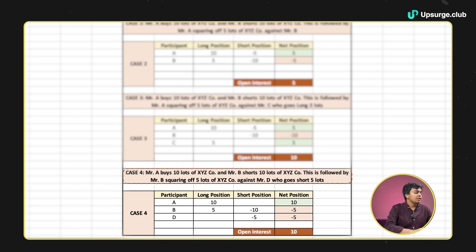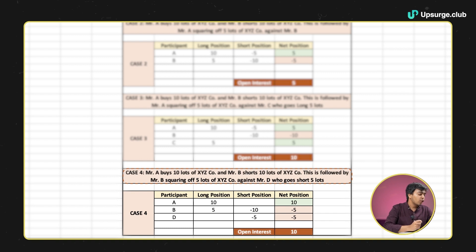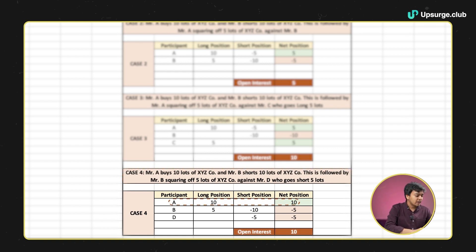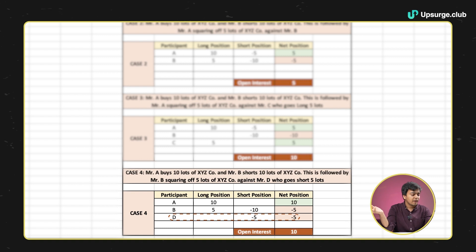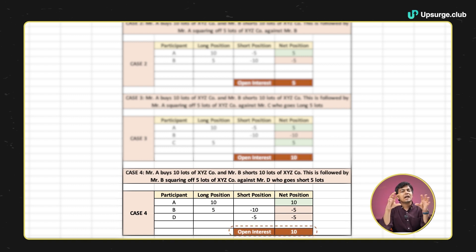In case 4, similarly, Mr. A buys 10 lots of XYZ and Mr. B shorts 10 lots — open interest is 10. This is followed up by Mr. B squaring off 5 lots against Mr. D who goes 5 lots short. B originally had a short position, so he buys 5 lots long to square off, and Mr. D takes the short side with minus 5. A's 10 long positions remain intact, and then we have 5 short positions split between two parties. The open interest remains 10 and the zero sum game still holds.